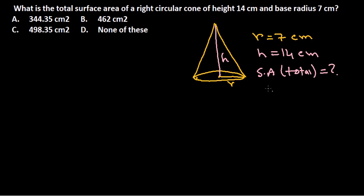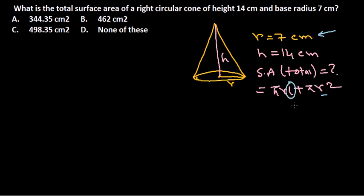What is the formula? The total surface area formula is πrl + πr². Among these values, we have r already provided, but we don't know l — the slant height. So we need to find l first in order to calculate the total surface area of the cone.